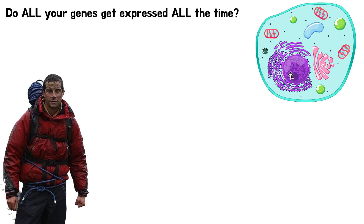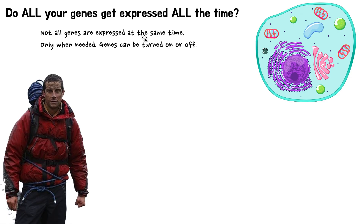One gene will code for one protein. Another segment of DNA, called another gene, will code for another protein. So you have many genes. Now, do all of your genes get expressed all the time? Expressed means: does this gene get turned into a protein all the time? Expressed basically means turned into a protein — does it get read and turned into a protein? And the answer is no.